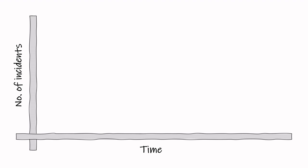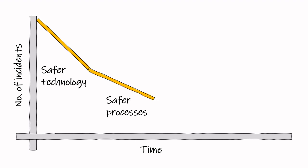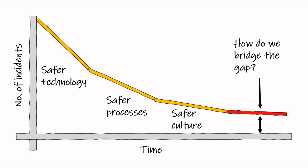Our industry has made great strides in safety performance over the last 50 years. Technology has become safer to use, and techniques such as hazard and bowtie analysis have given us ways to think about and manage hazards. This approach has served industry well, but in recent years safety performance has stalled. What more can we do to achieve the next step change in safety performance?